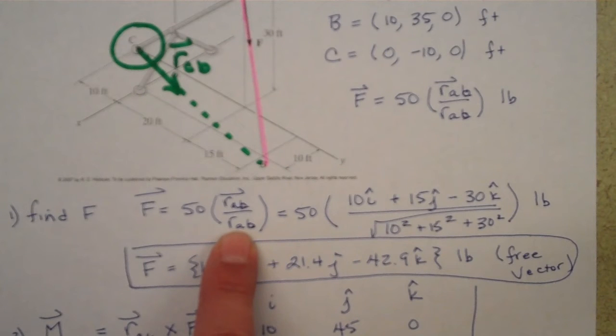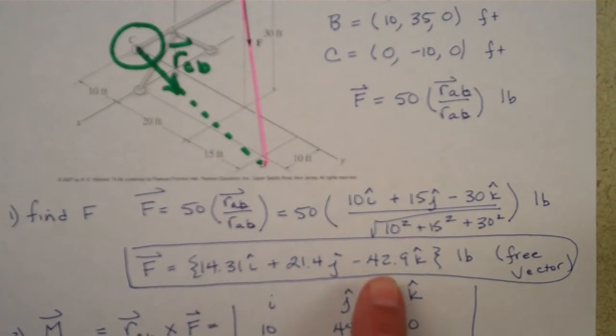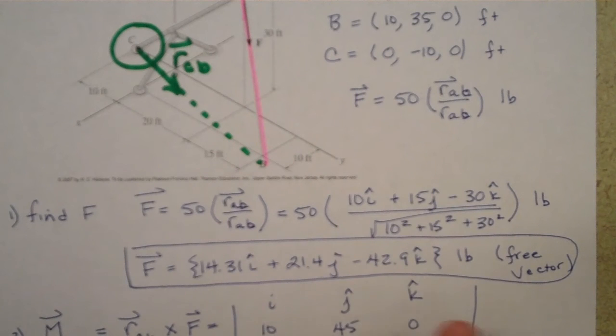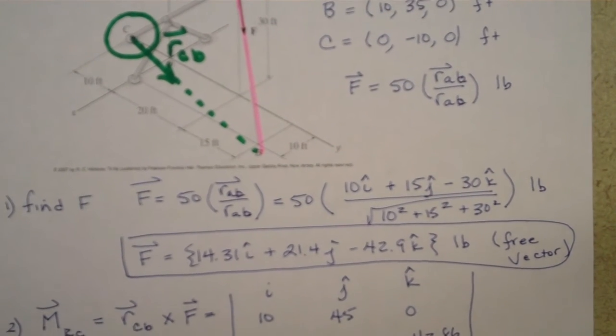Magnitude times the unit vector or the direction vector, and as I said, if we do B minus A, we get that that position vector is 10i, 15j, negative 30k, and we divide by its magnitude to find what the unit vector is and then multiply that by our magnitude of 50.